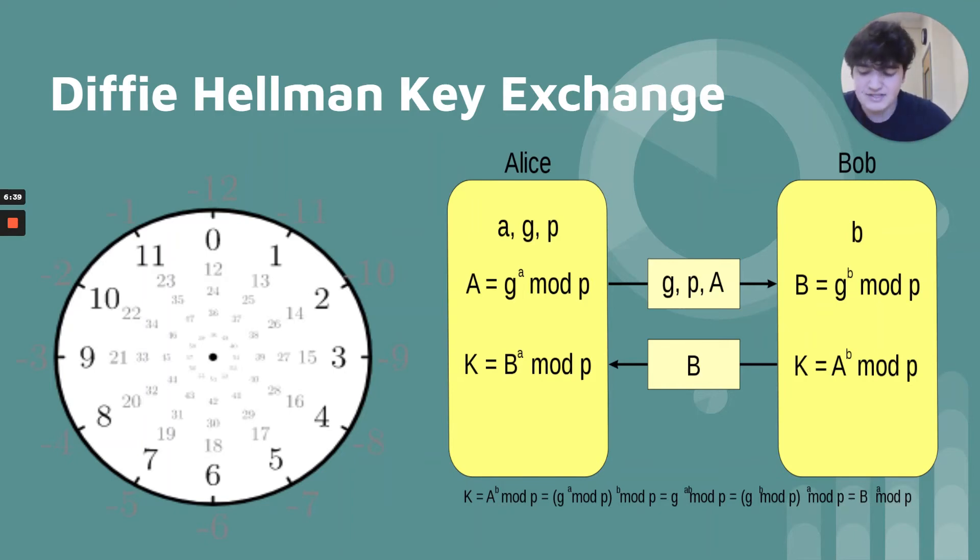In this way, Alice and Bob have essentially created a key together. Note that the trapdoor function is the reason that Diffie-Hellman works. When Alice and Bob send each other their public components of the symmetric key, a person that intercepts this value will not be able to extract Alice's private key, A, or Bob's private key, B, from it, as they don't know A or B, they'll never be able to know G to the power of A times B mod P. In other words, they'll never be able to access the deciphering key.